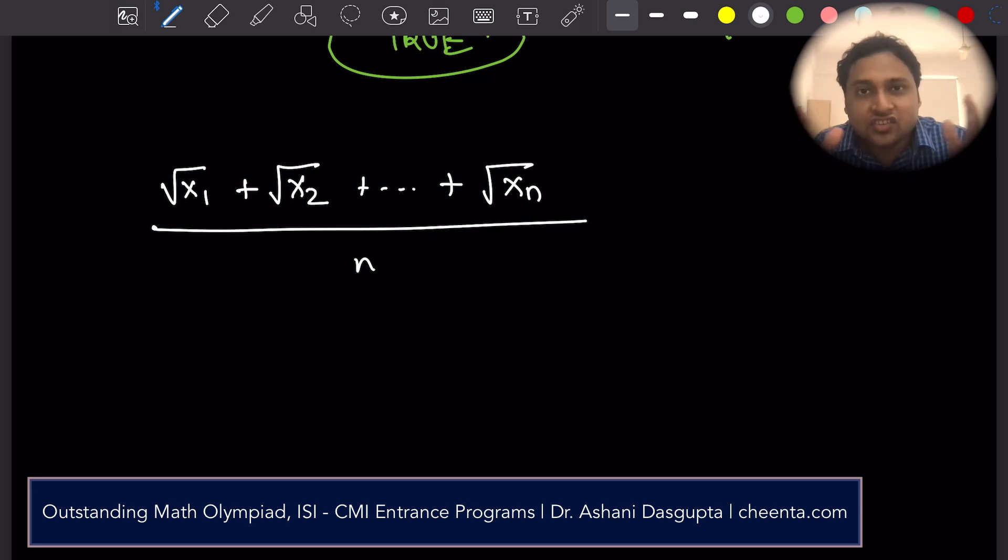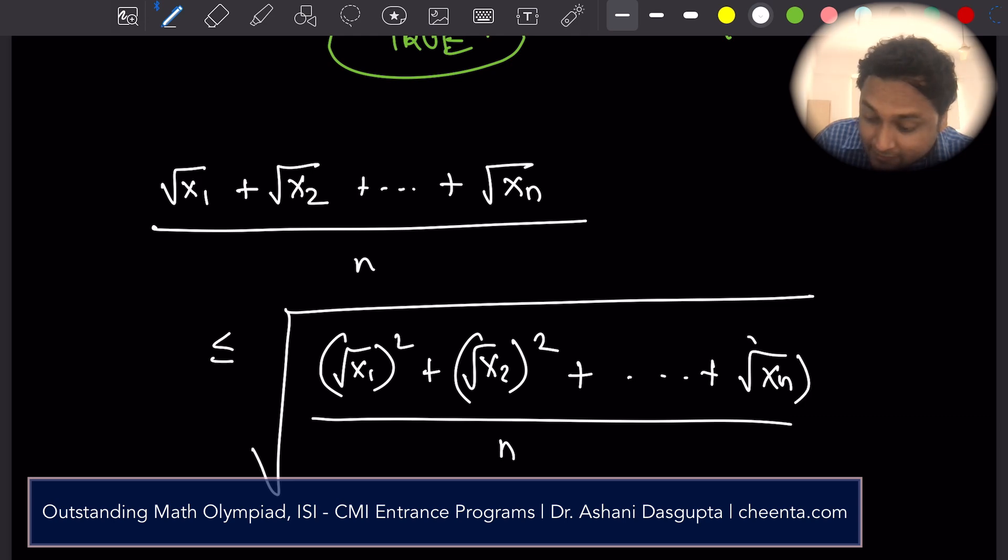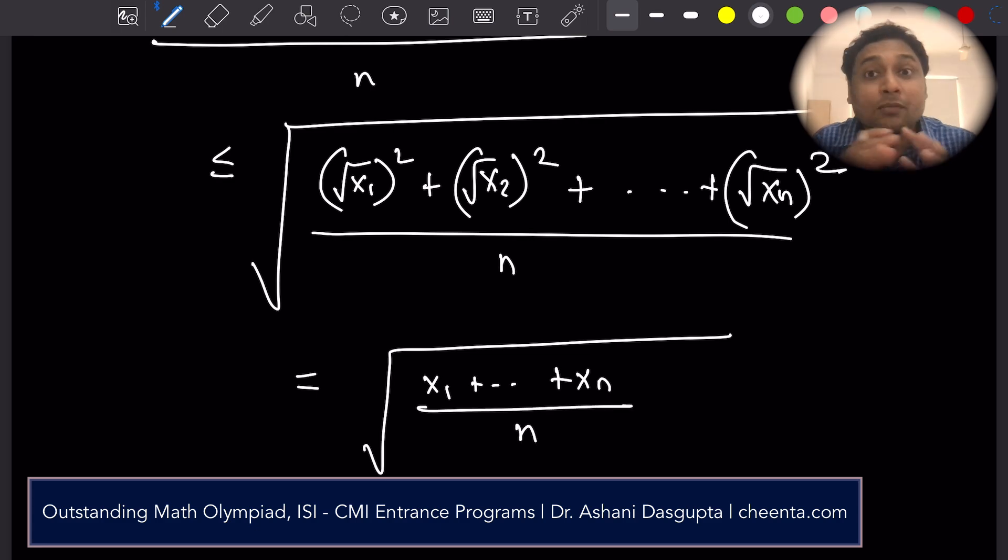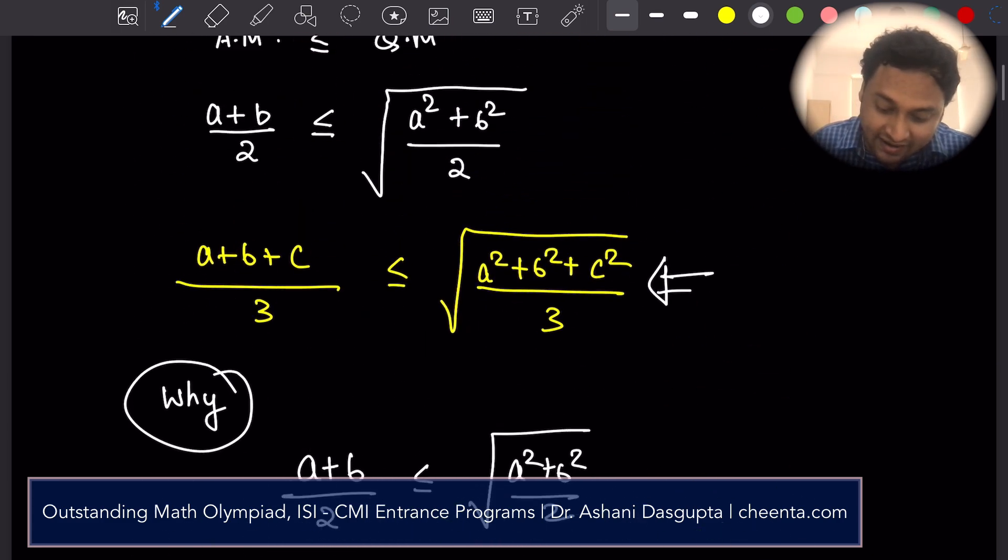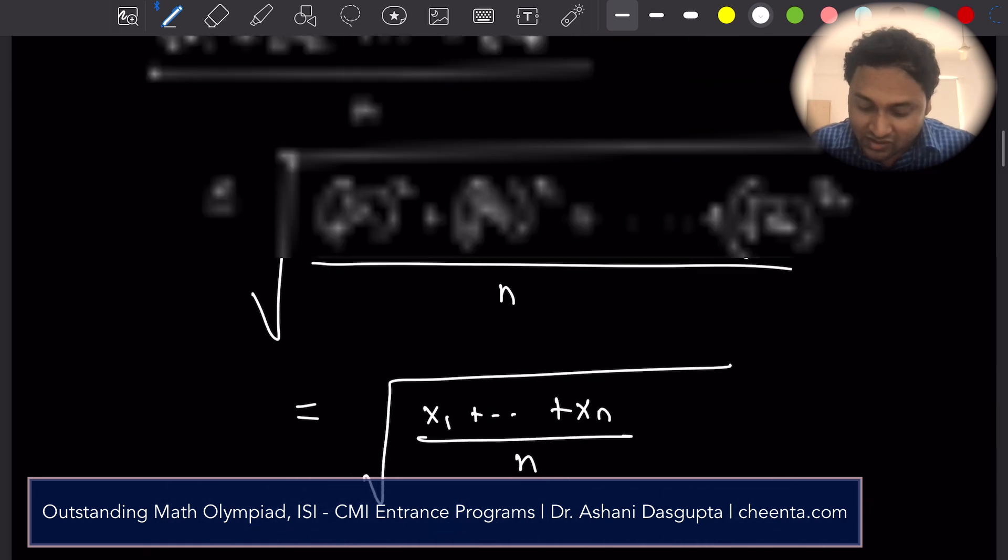You take the average of the n numbers. But we know that it's less than or equal to square root of, divided by n, square of each of the numbers. So square root of x1 whole square, square root of x2 whole square, up to square root of xn whole square. And then we are almost done. Because now this is equal to square root of x1 up to xn divided by n. We know the sum of the n numbers is 1. That's given data. If you check at the very beginning, the sum of the numbers is 1. So we can just replace this by 1. So square root of 1 by n.